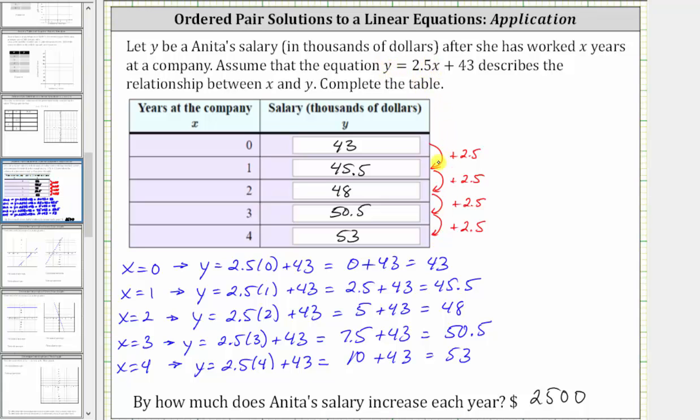which we also see in the table, which is why the salary increases by $2,500 each year. This linear equation is in slope-intercept form where the coefficient of x, which is 2.5, is called the constant rate of change, or the slope if we were to graph the line on the coordinate plane.